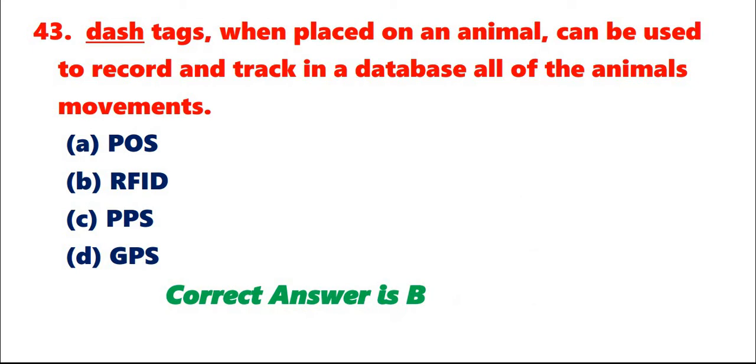Question 43: Tags, when placed on an animal, can be used to record and track in a database all of the animal's movements. A. POS. B. RFID. C. PPS. D. GPS. Correct answer is B.